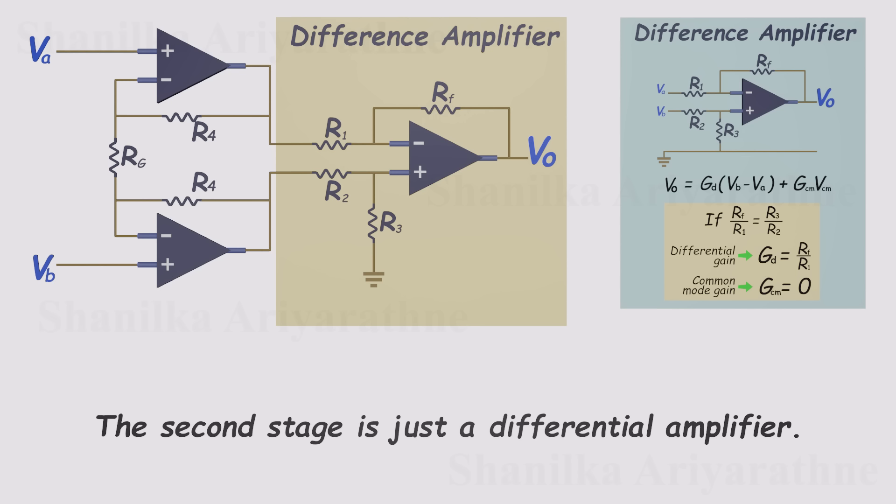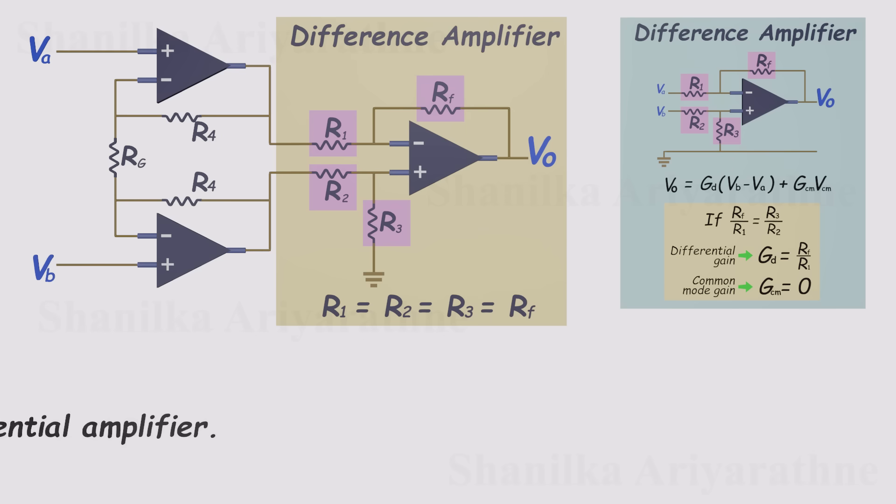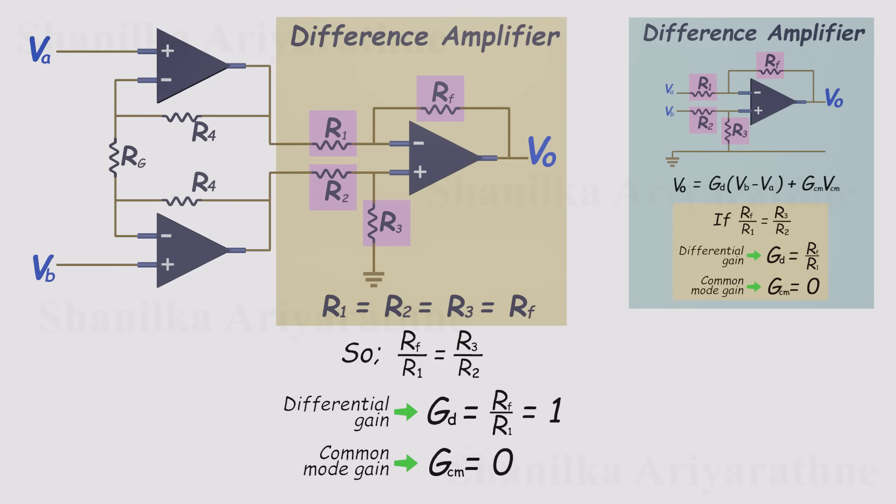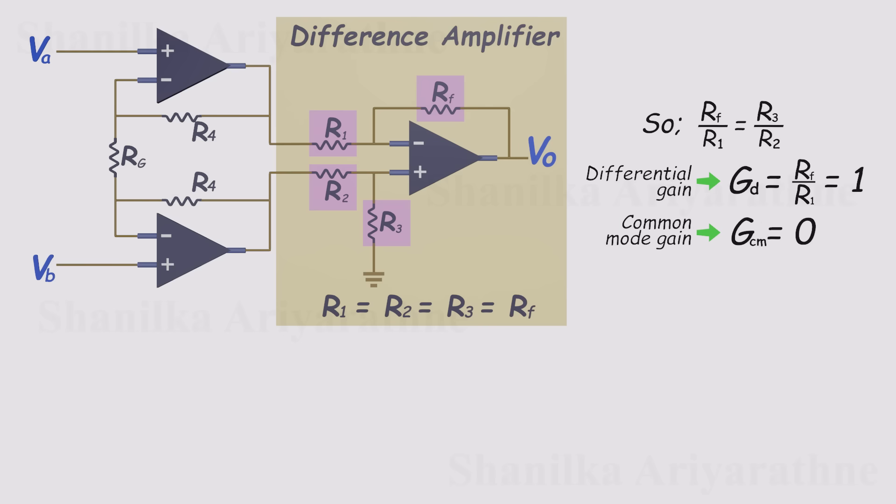In an instrumentation amplifier, this balance is built right in. The resistors R1, R2, R3, and Rf are all made equal, so the math works out beautifully. The differential gain is one, and the common mode gain is zero. If we label the inputs to this differential amplifier as V1 and V2, then the output is simply V2 minus V1.